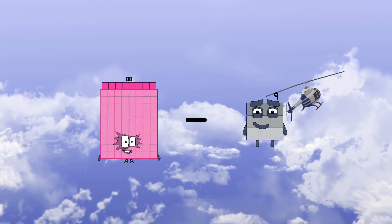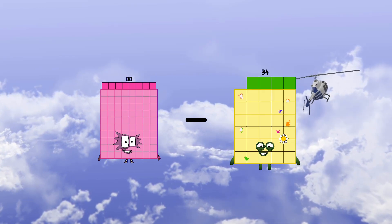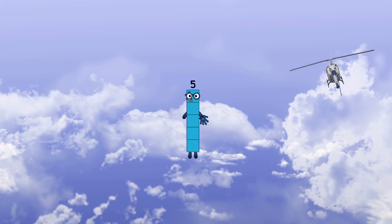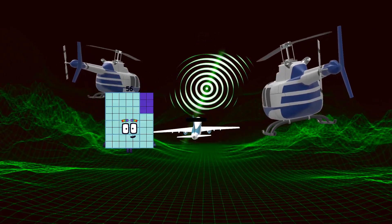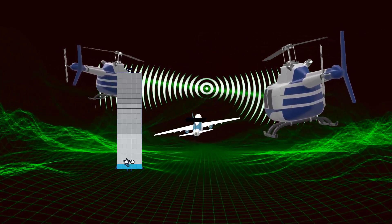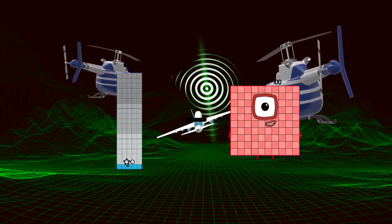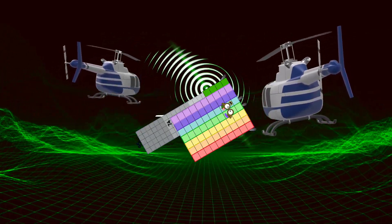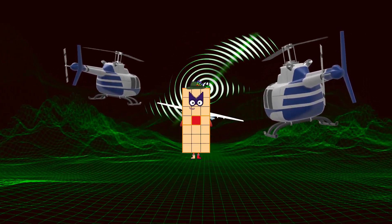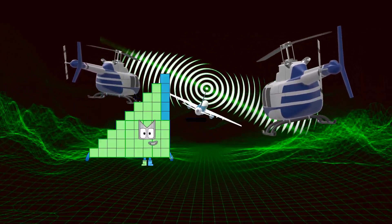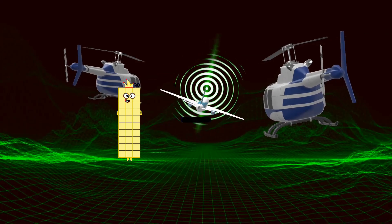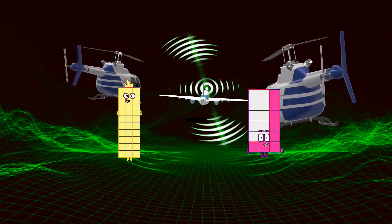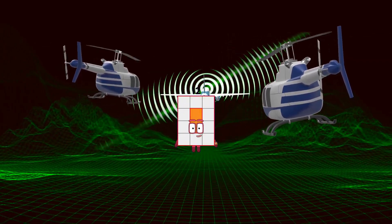80 minus 67 equals 13. 88 minus 83 equals 5. 95 minus 74 equals 21. 30 minus 18 equals 12.